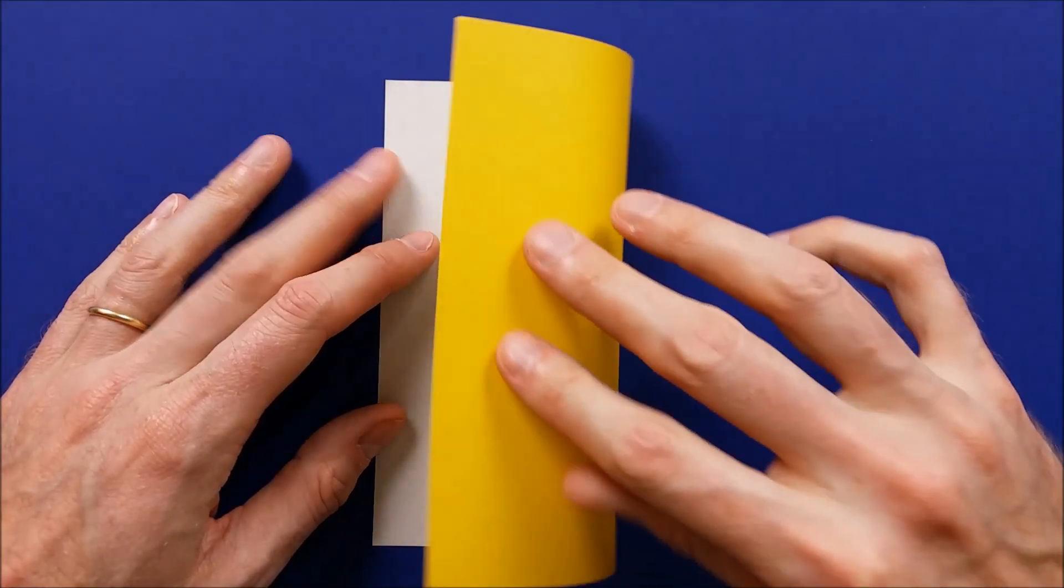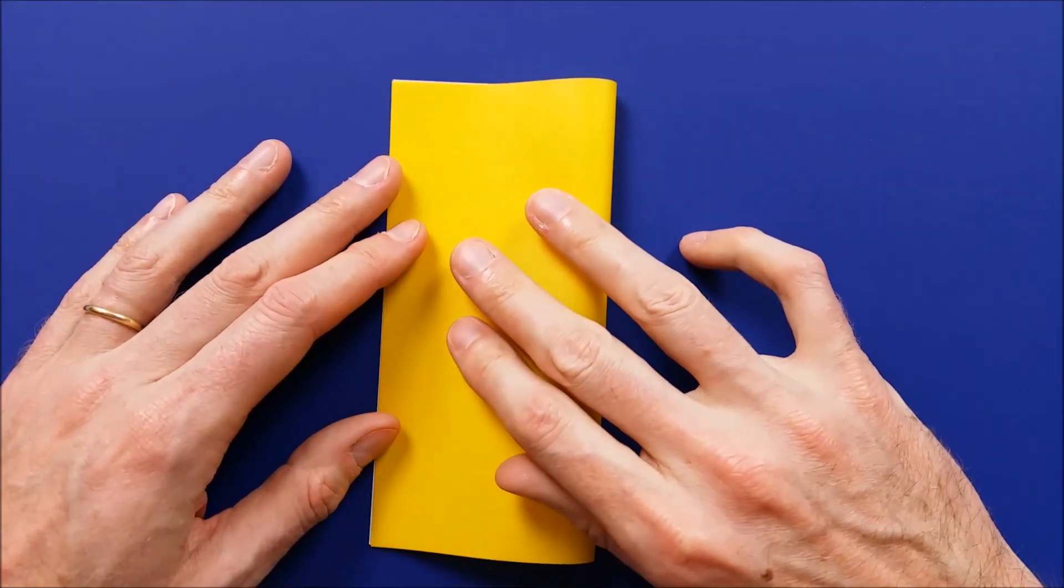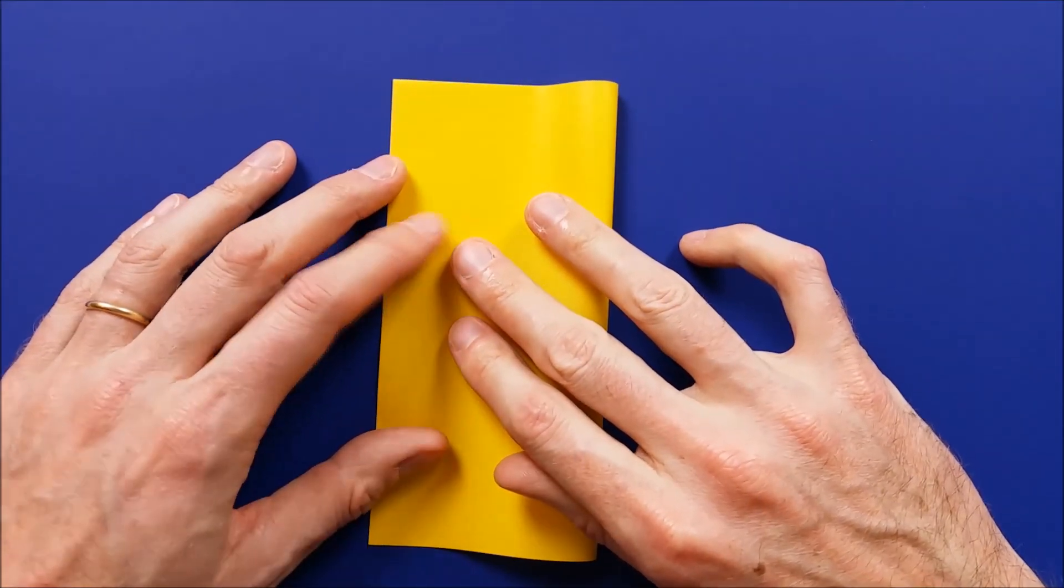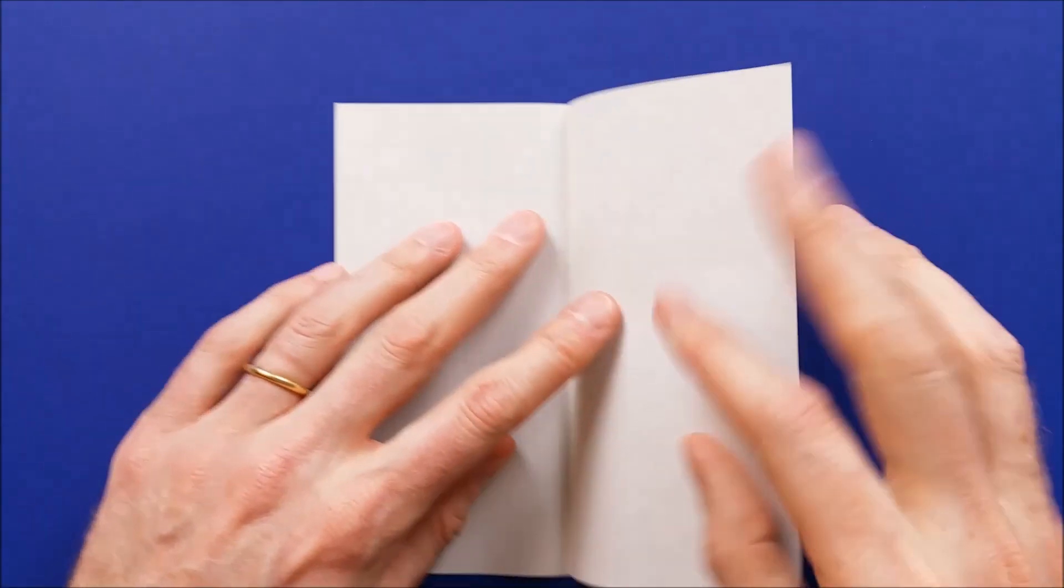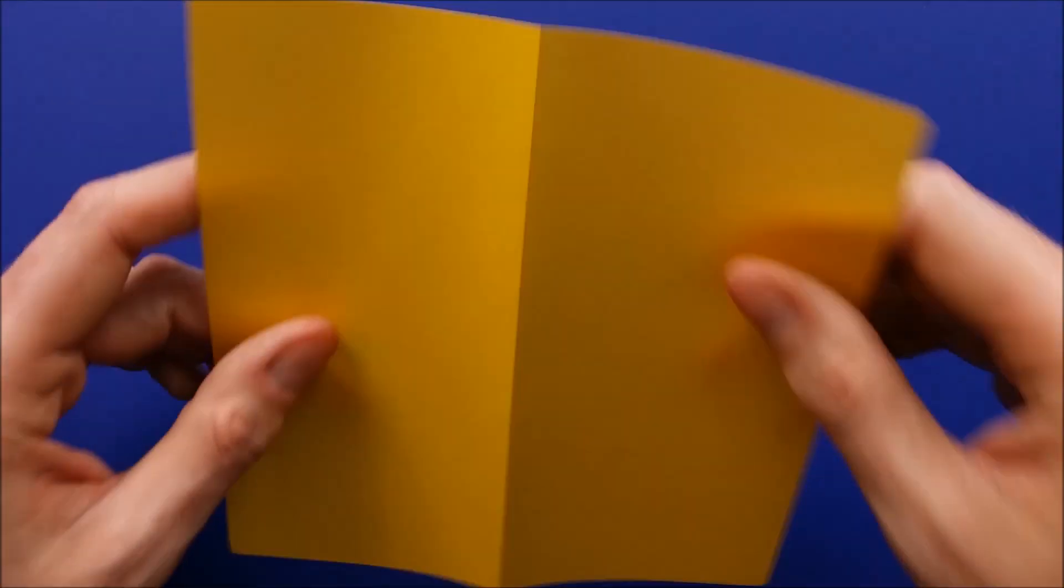First we will fold the square vertically. Mark the fold. Unfold and turn the paper over.